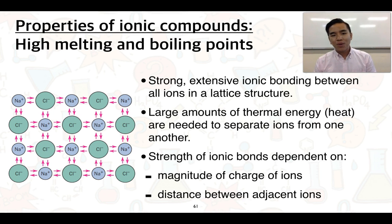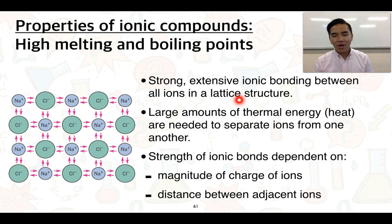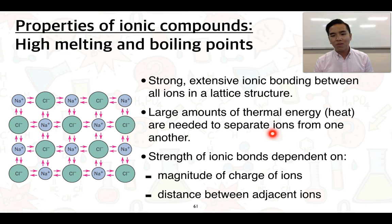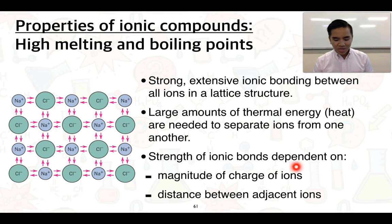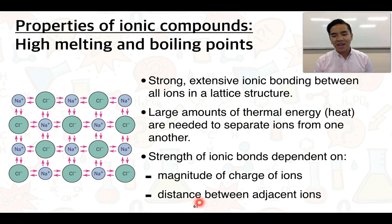Moving to melting points and boiling points: ionic compounds have strong extensive ionic bonding throughout the lattice structure - a repeating network of ions. Because of that strong extensive bonding, you need large amounts of heat or thermal energy to break apart and separate the ions from one another. So we often need to heat these to high temperatures to cause them to melt, and we would rarely see ionic compounds reach their boiling point. The strength of ionic bonds depends on the magnitude of the charge of the ions - whether they are one, two, or three positive or negative - and also how closely the ions can pack together; the closer they are, the stronger the attractions.